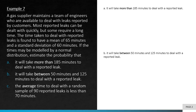Before we go on, note that the first two questions, parts a and b, are regular normal distribution probability questions. However, part c is the sampling distribution of the sample mean, because they ask us to find the probability for the average.